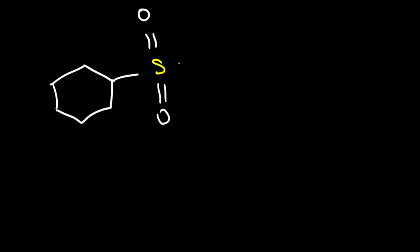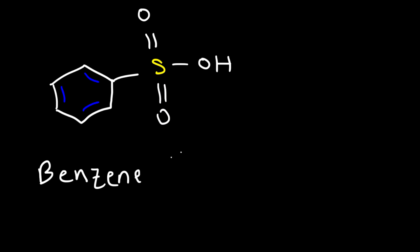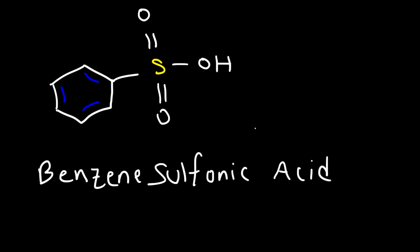What if we have a benzene ring attached to a sulfur atom that has two double-bonded oxygen atoms and an OH group? This group is called a sulfonic acid. Combined, this is benzenesulfonic acid — kind of like a carboxylic acid, but instead it's a sulfonic acid.